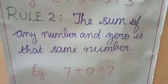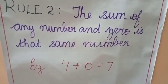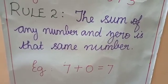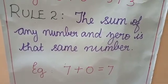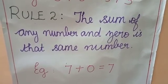Rule 2: The sum of any number and 0 is the same number. When you add any number with 0, you get the same number. Example: 7 plus 0 gives you 7. With these in mind, let's go into the class.